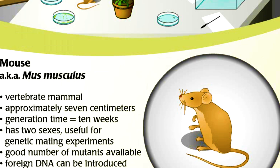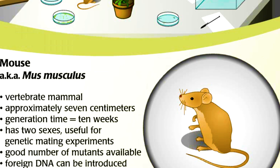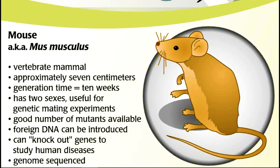Mouse: Mus musculus. Vertebrate, mammal. Approximately 7 centimeters. Generation time is 10 weeks. Has 2 sexes, useful for genetic mating experiments. Good number of mutants available. Foreign DNA can be introduced. Can knock out genes to study human diseases. Genome sequenced.